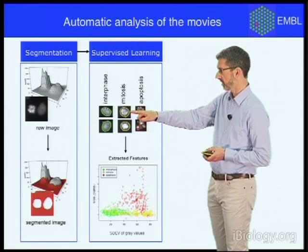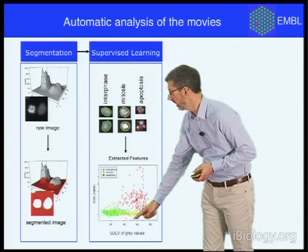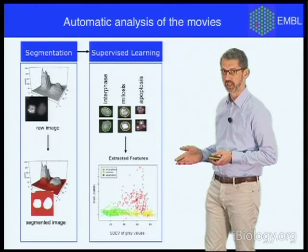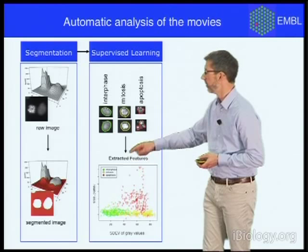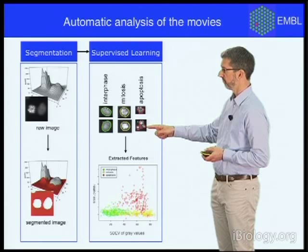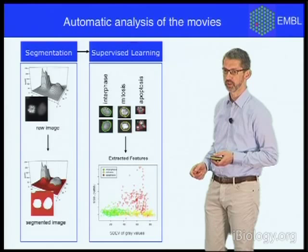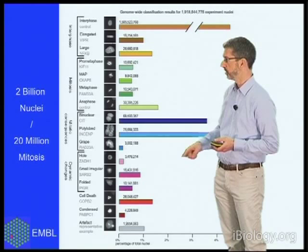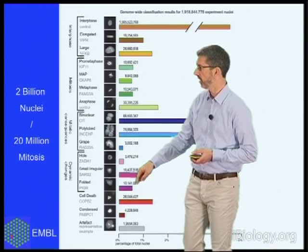By comparing the features between different annotated classes, the computer can make quantitative distinctions. This is illustrated in this feature plot for two such features — how round a cell is and the standard deviation of the gray values inside the cell, which means how evenly labeled the cell is. Apoptotic cells in red are very different from interphase and mitotic cells because they are no longer round and no longer evenly labeled, as their genome is fragmented. If you imagine 200 such parameters, you have a very powerful automatic classification algorithm that can differentiate 16 different morphological classes across the entire genome-wide dataset, allowing computation analysis in a week of 2 billion images of individual nuclei or 20 million movies of cell division events.